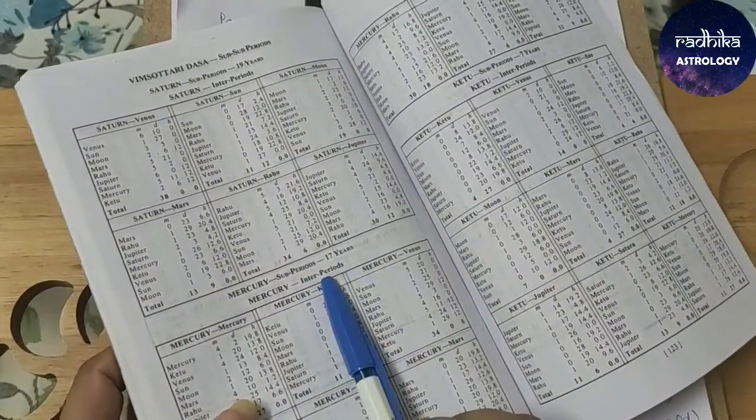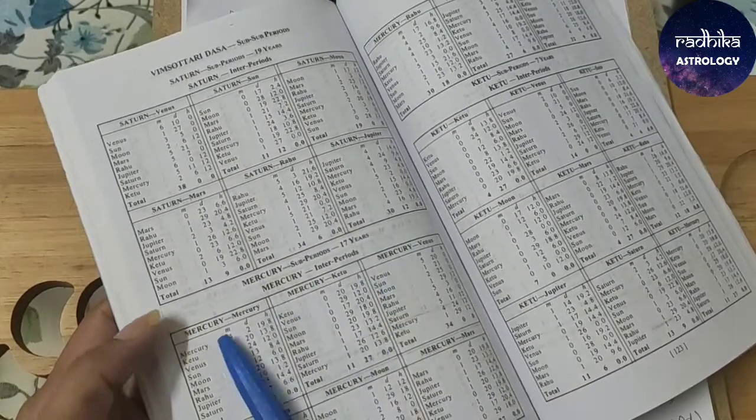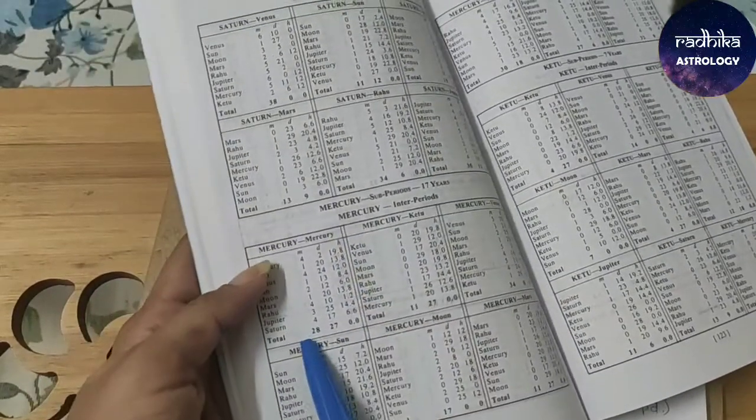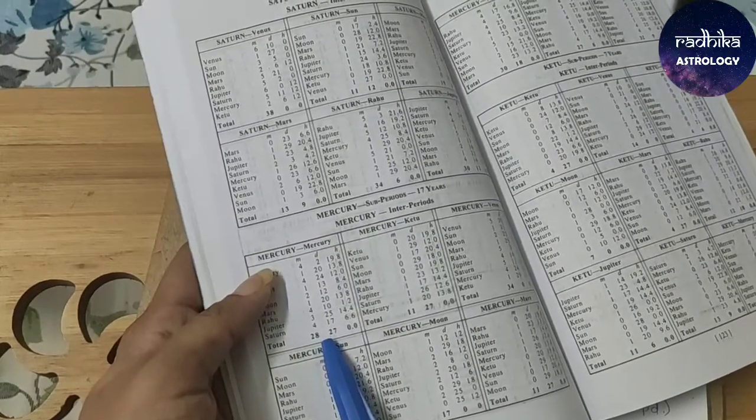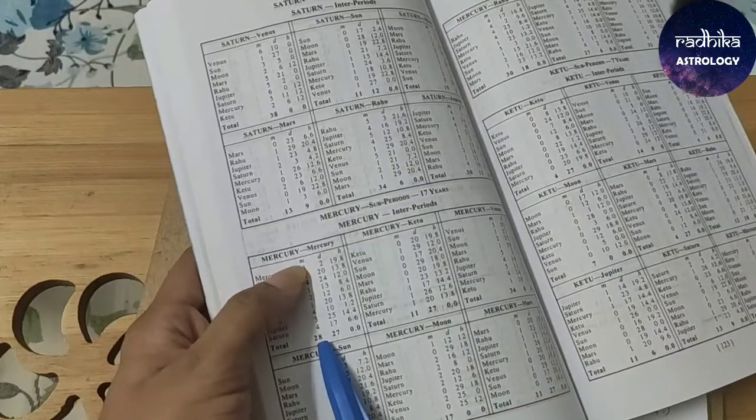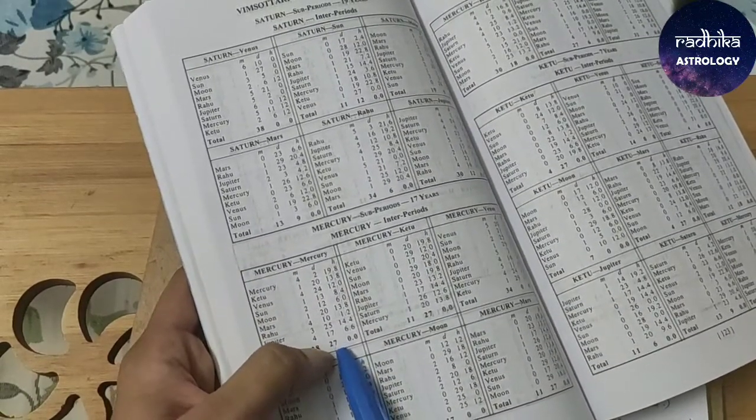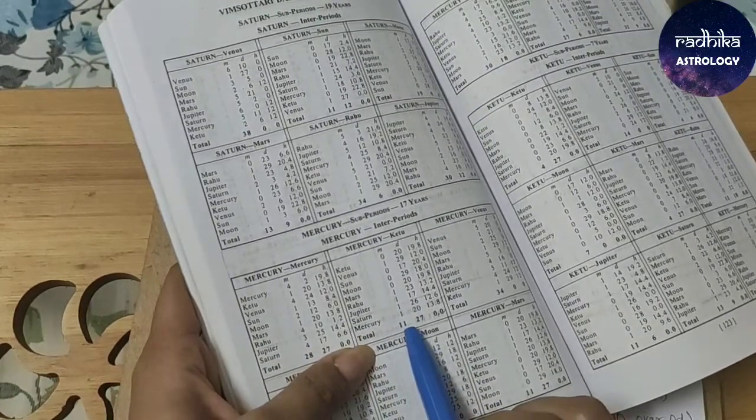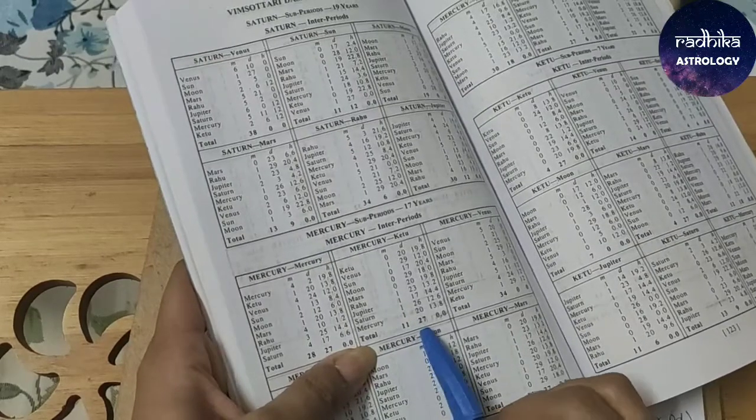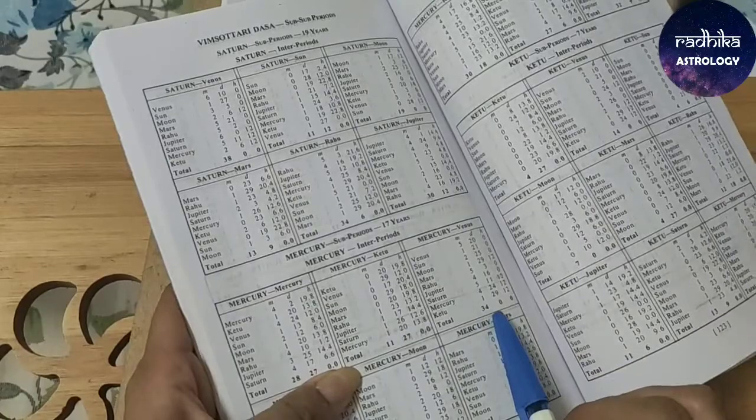Mercury inter-periods in Mercury, Mercury. Mercury Ketu. These are the Antardasha periods. Mercury, Mercury. Mercury has given total, you can see the total below. Mercury has given 28 months, 27 days to Mercury itself as its Antardasha lord. Then, Mercury has given Ketu 11 months, 27 days. Then, Mercury has given Venus 34 months.